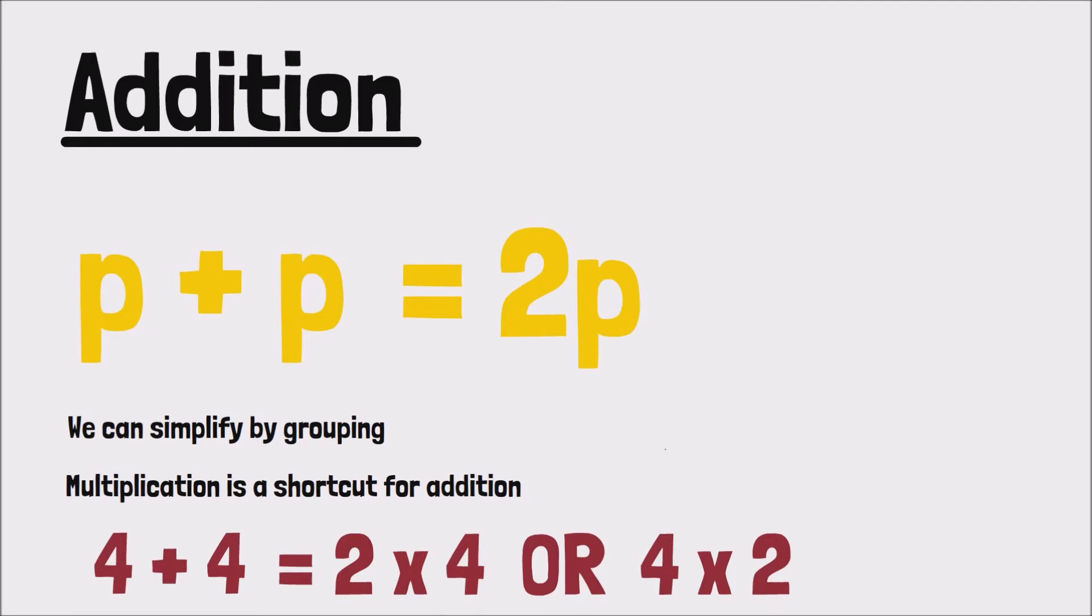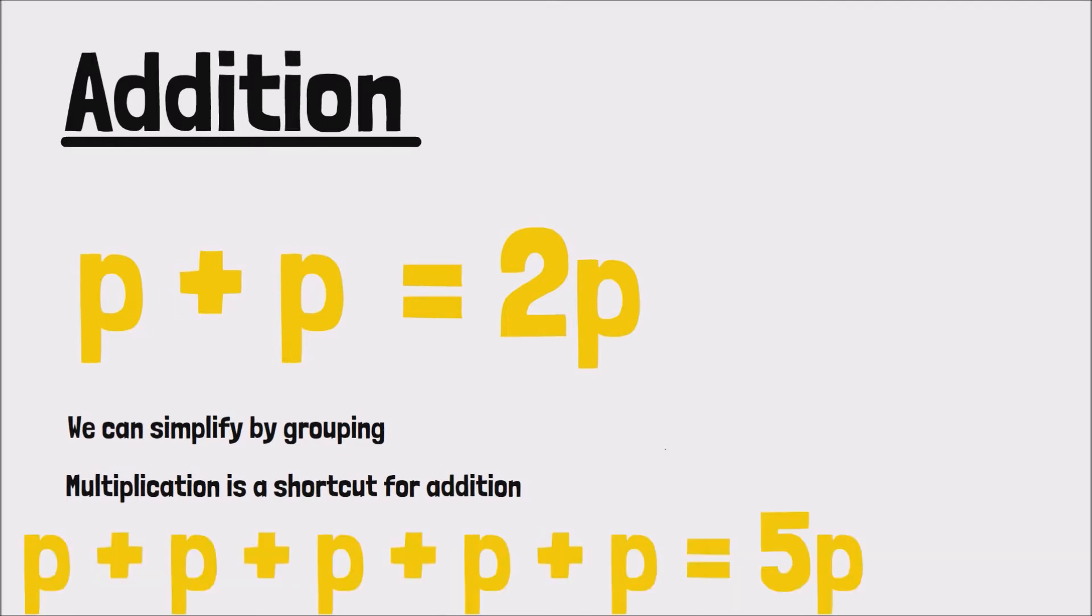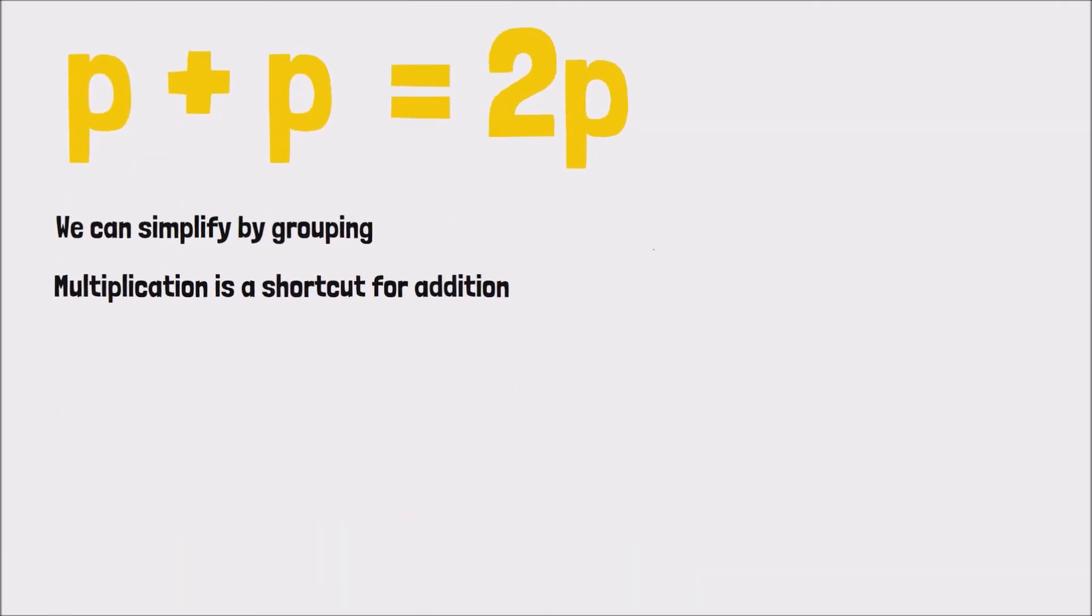Now this might not seem like we're doing much simplifying, but consider larger groups like say 5 groups of P being added together, or even 12 groups of P being added together, and now you see how this makes life a lot easier. Now what if we had 2P plus 3P?